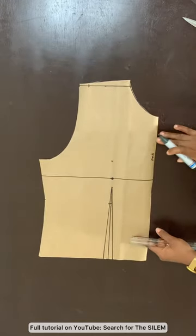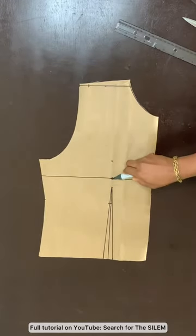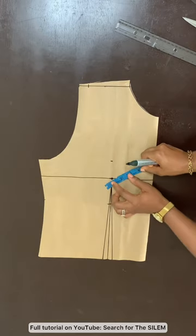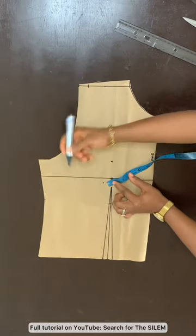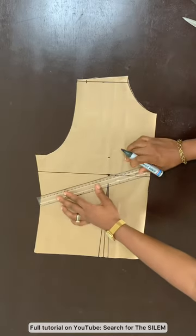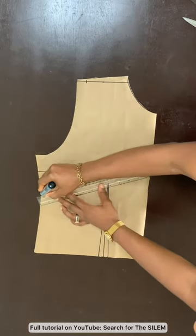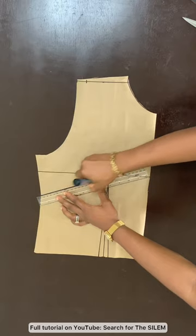We already have our waist darts in place but now we're going to mark the point where we want our new darts to be created. The point right there at the center is our bust point and we want the peak of the new darts to be one inch away from the bust point. Now we're just going to connect those two points together with a straight line.